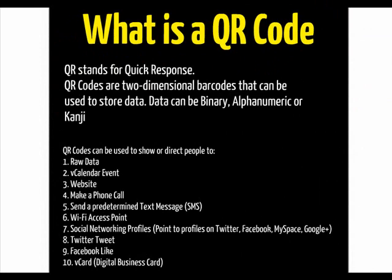Unlike a UPC or an EAN barcode, where it only holds numeric data and is database-associated, you put data into a QR code, and they can be used to show or direct people to a lot of raw data, a calendar event, or point them to your website. They can make a phone call or send predetermined text messages.